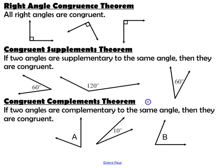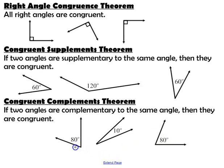The congruent complements theorem follows the same idea: if two angles are complementary to the same angle, then they are congruent. Here we have an angle measuring 10 degrees. If angle A is complementary to this angle, it would be 80 degrees. If angle B is also complementary to this angle, it would also be 80 degrees. Therefore, the two complements are congruent to each other.